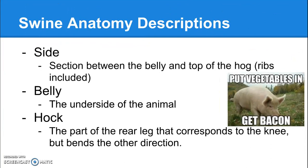The side is exactly what you would think it is — that section between the belly and the top of the hog. This includes the ribs, so the ribs are just one part of the side. The belly is the underside of the animal; that's actually where bacon comes from. The hock is the same joint in swine as it is in cattle — it's that part of the rear leg that corresponds to the knee on the front leg, but it bends the opposite way, backwards.